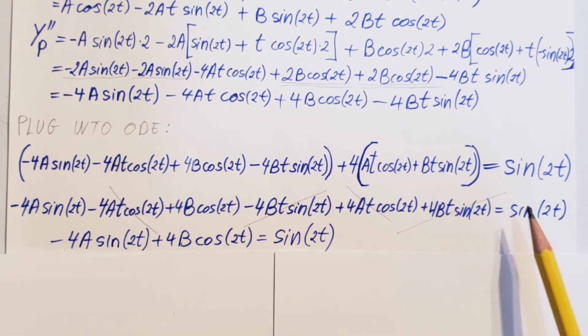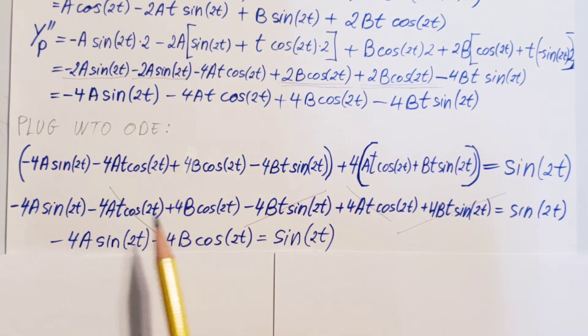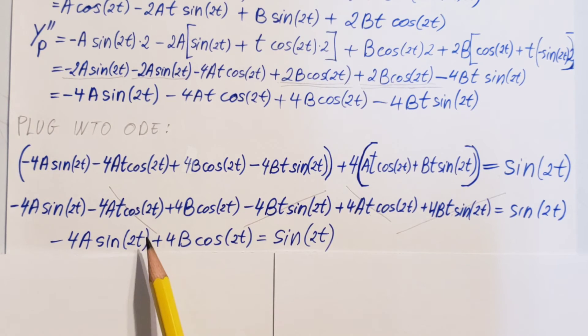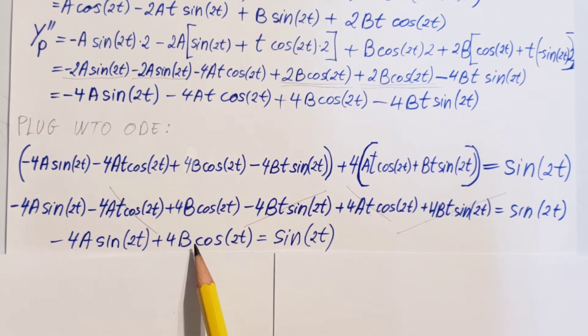Simplify it and clean it up as much as possible. Then, we're able to get to having only two terms on the left hand side. Negative 4a sine 2t plus 4b cosine 2t. Right hand side stays unchanged. Sine 2t.